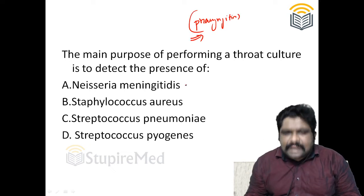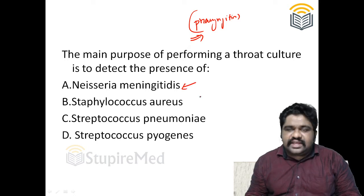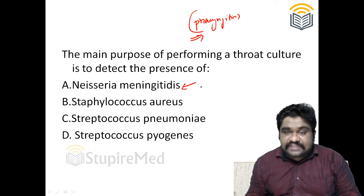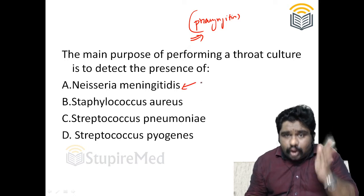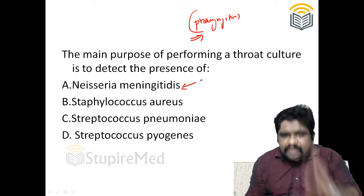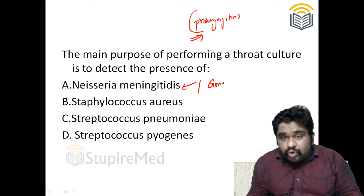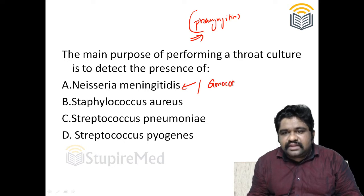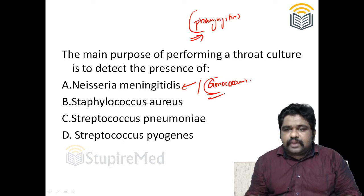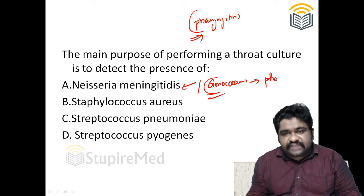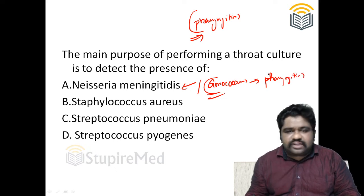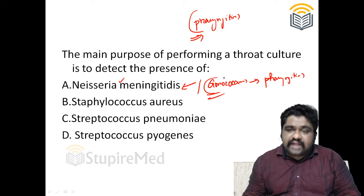Neisseria meningitis is not an organism known for causing pharyngitis. The question and the option have been very close here — gonococcus would have been the closest answer because gonococcus can easily cause pharyngitis and sore throat. So we will not be culturing for Neisseria meningococcus; we may culture for Neisseria gonococcus.